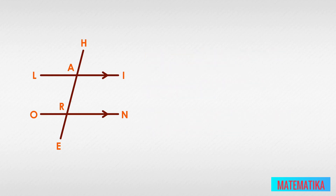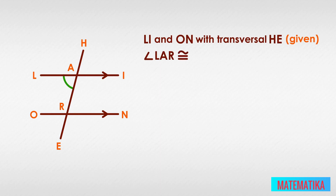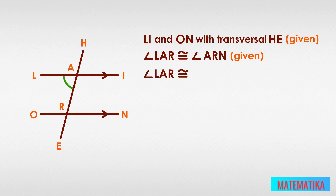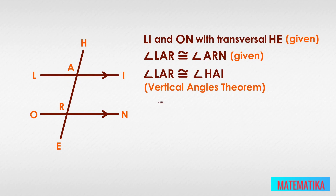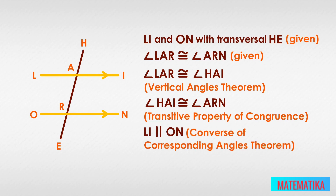To prove the converse, we work the other way around. LI and ON with transversal HE — given. Angle LAR is congruent to angle ARN — given. Angle LAR is congruent to angle HAI by the vertical angles theorem. Angle HAI is congruent to angle ARN by the transitive property of congruence. Therefore, LI is parallel to ON by the converse of the corresponding angles theorem.